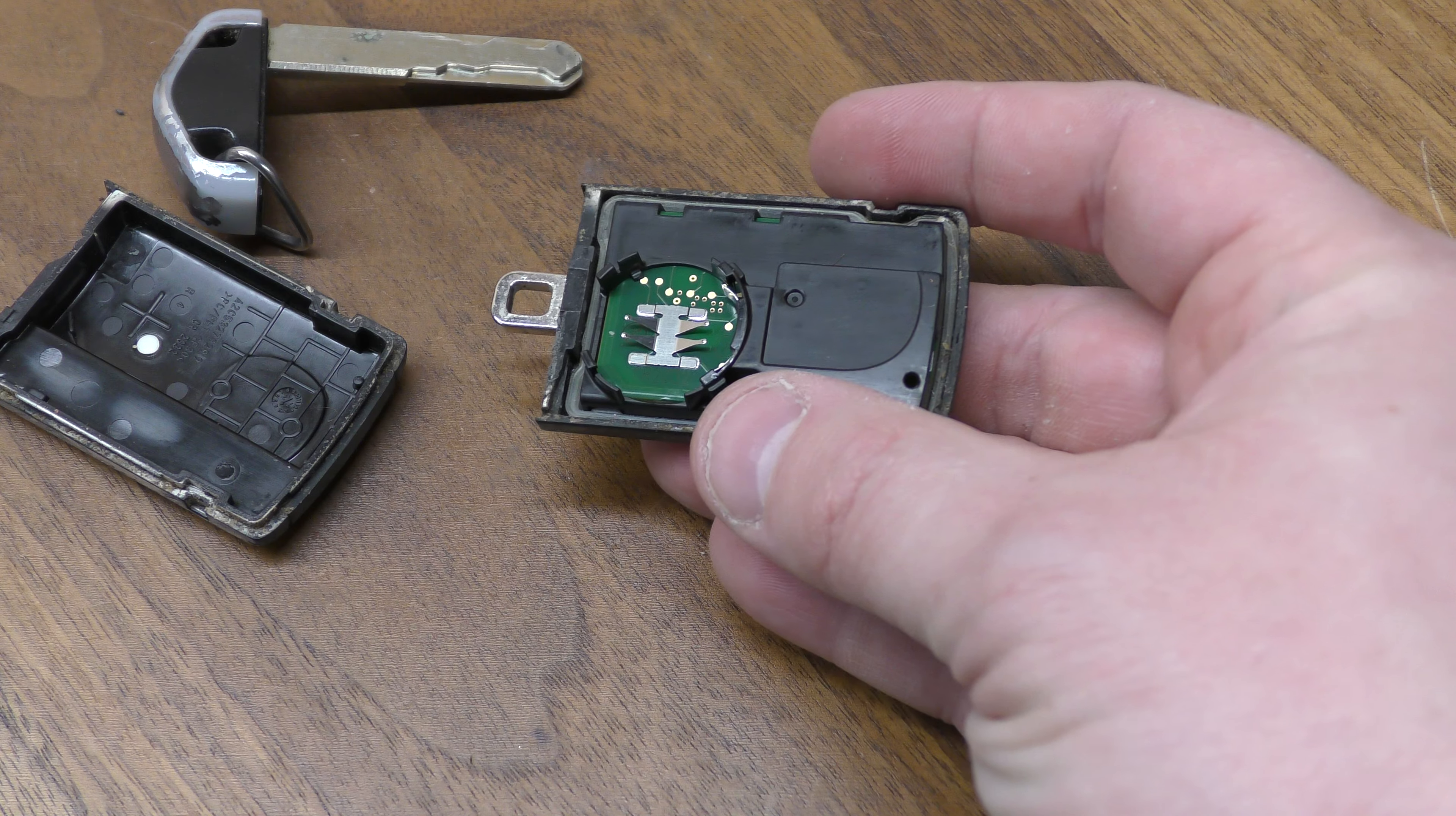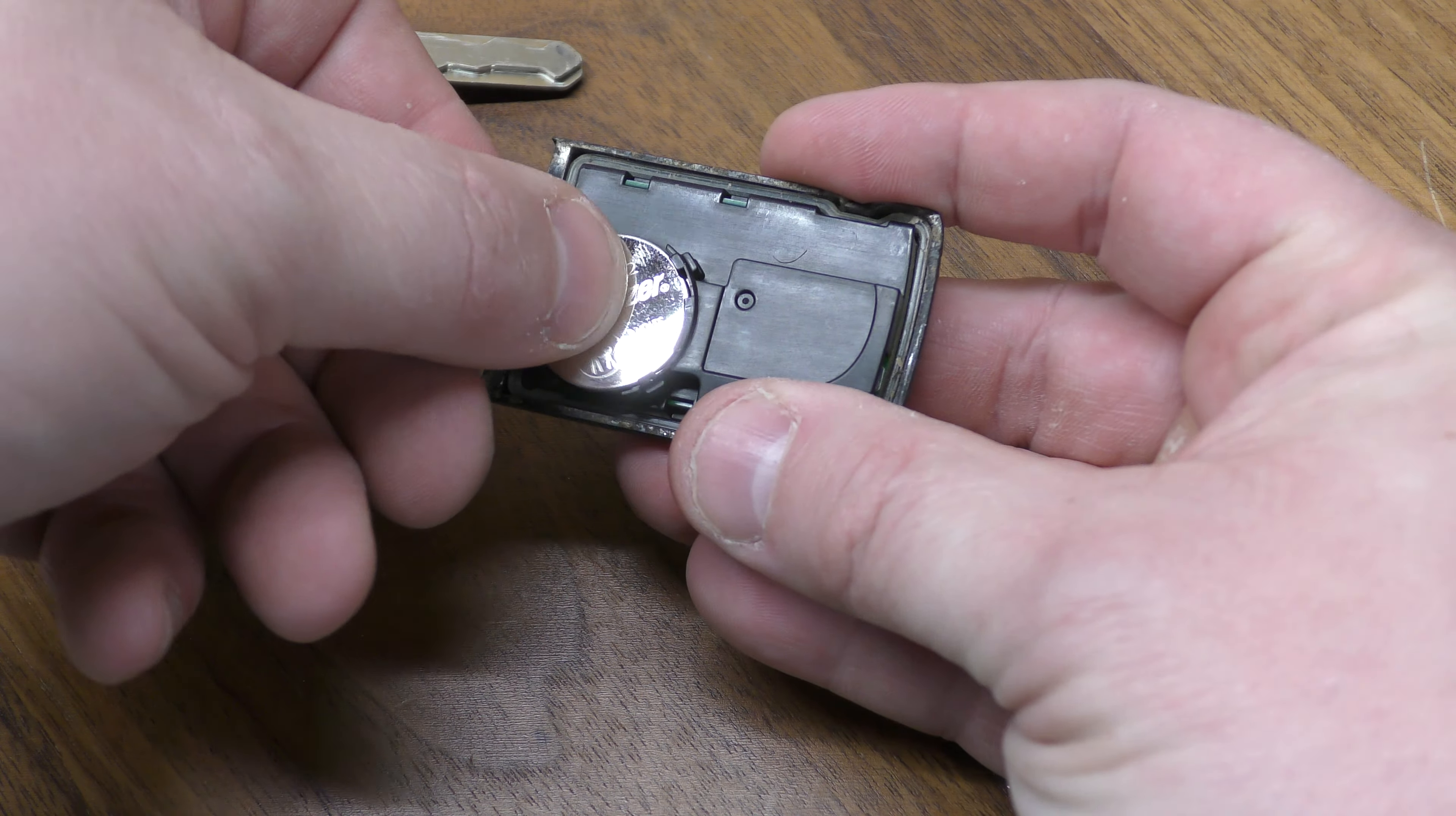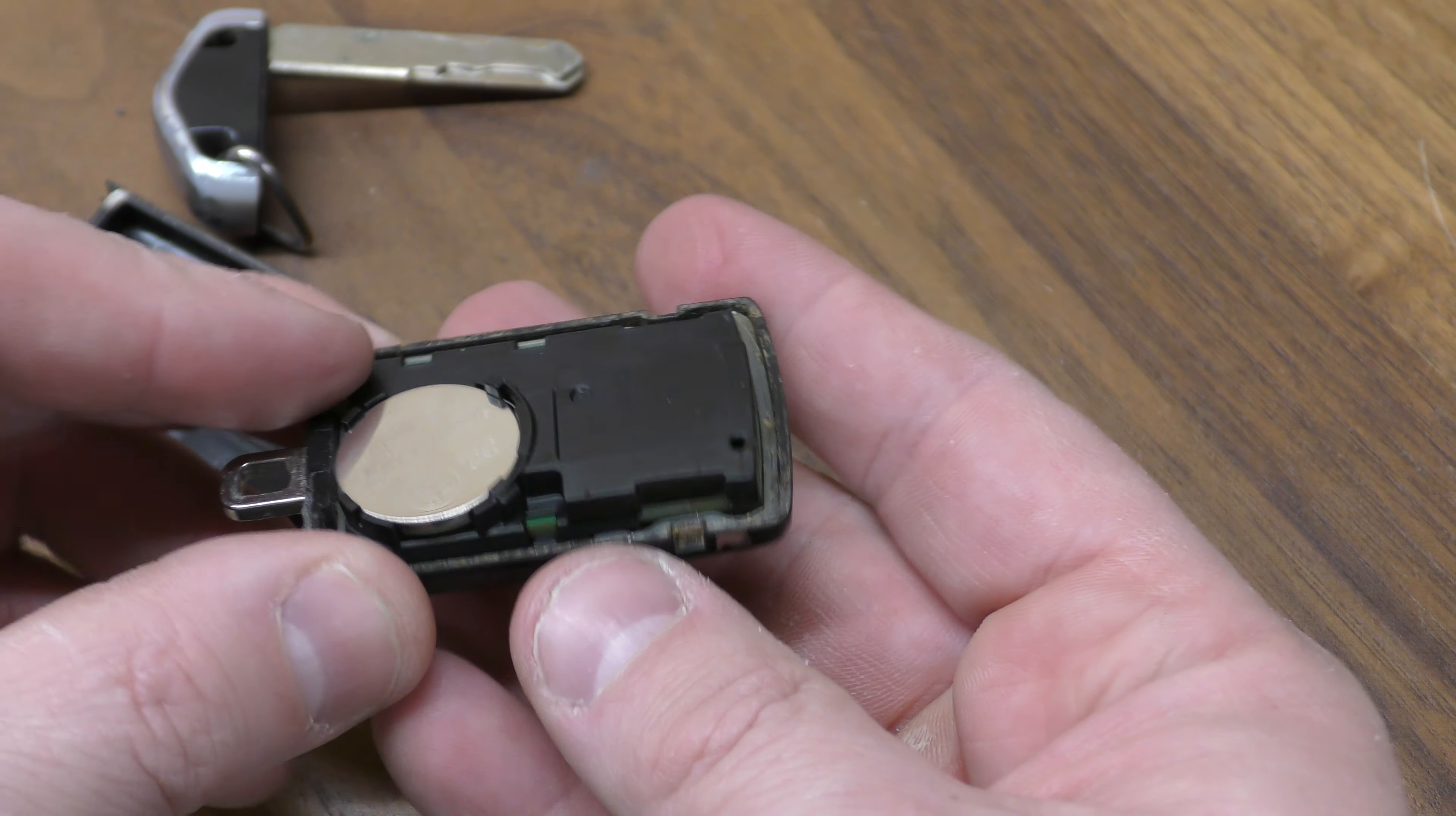You can pop it out right here. Take your old battery out. The new one goes in positive side facing upward and you can go ahead and test it right here. Make sure your red light is on. You're good to go.